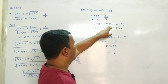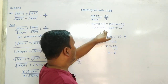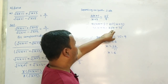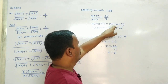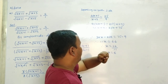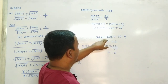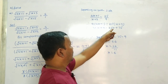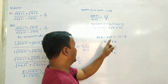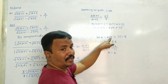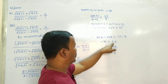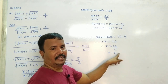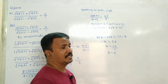Squaring and cross multiplying: 9 into (4x+1) is equal to 25 into (x+3), so 36x + 9 is equal to 25x + 75. Therefore 36x - 25x is equal to 75 - 9, giving 11x is equal to 66, so x is equal to 66 divided by 11.